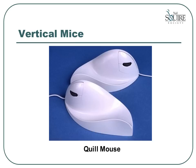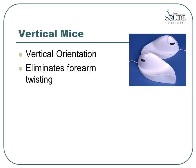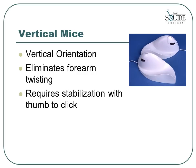The next type of mice we will look at are called vertical mice. These mice have been designed with a vertical orientation. If you take a standard mouse and hold it so that the right-hand edge is on the desk, you will have the shape of a vertical mouse. The mouse is designed this way in order to eliminate twisting of your forearm while gripping it. For many people with hand and wrist issues, the vertical positioning of the hand can feel more comfortable. However, to click with this mouse you must be able to stabilize it using your thumb, so it may not be suitable for someone who has finger issues.